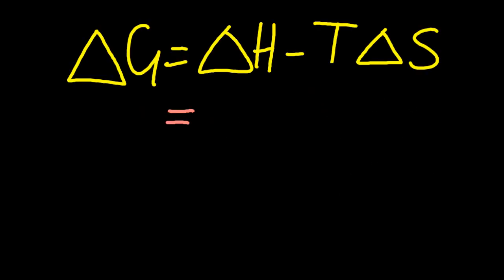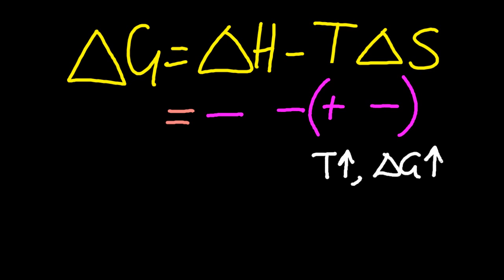Let's go back to delta G. Now, delta H was negative. It's exothermic. Temperature's always positive. Delta S was negative. So as we increase the temperature, delta G becomes greater. Spontaneity decreases.